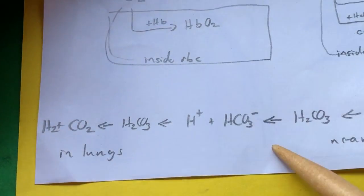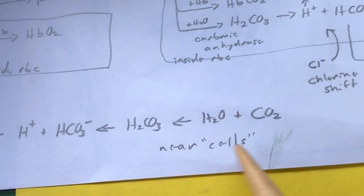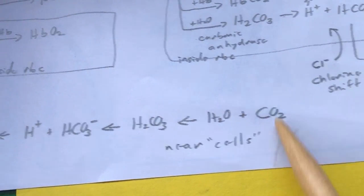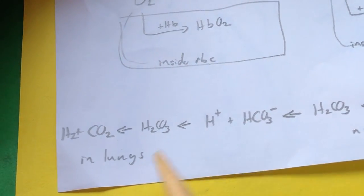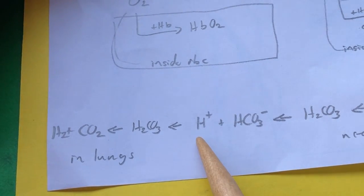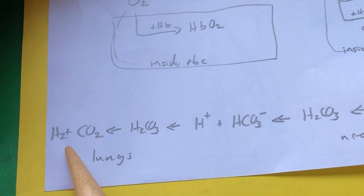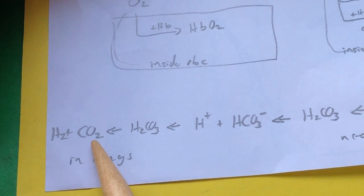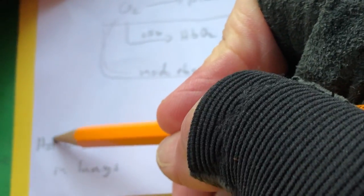Near the cells where carbon dioxide is very abundant, CO2 combines with water to make carbonic acid, which dissociates into H+ and HCO3−. Near the lungs, the bicarbonate and H+ come back together to make carbonic acid, which then breaks down into H2O and CO2, making the carbon dioxide available for exhalation.